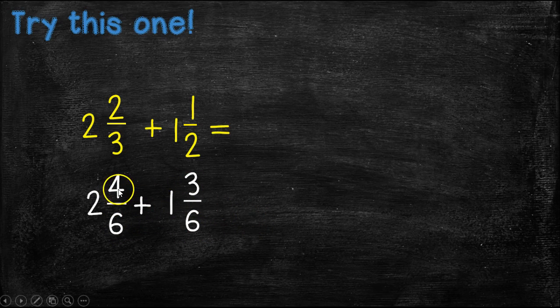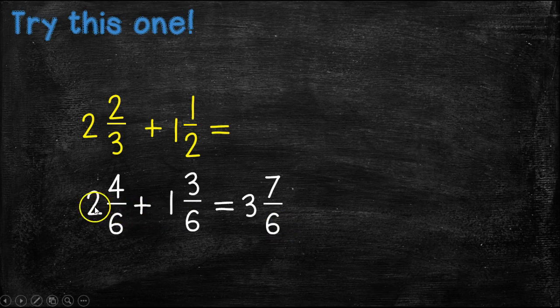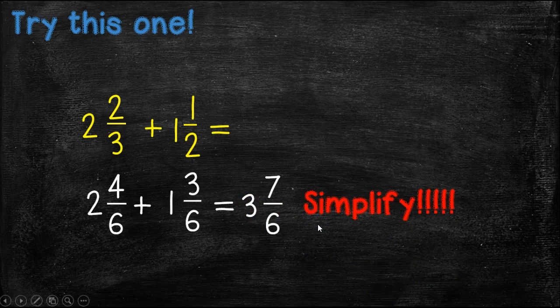So our new problem is 2 and 4/6 plus 1 and 3/6. Well, the first thing we're going to do is add up our fraction, so four plus three is seven, bring the denominator over, and two plus one is three. But wait a minute, this isn't the answer I showed you. That's because you did not simplify.